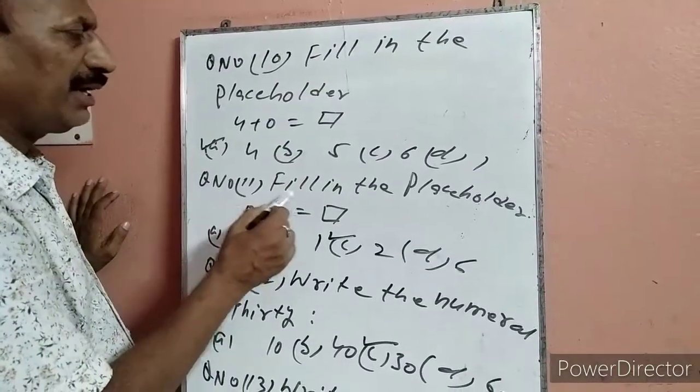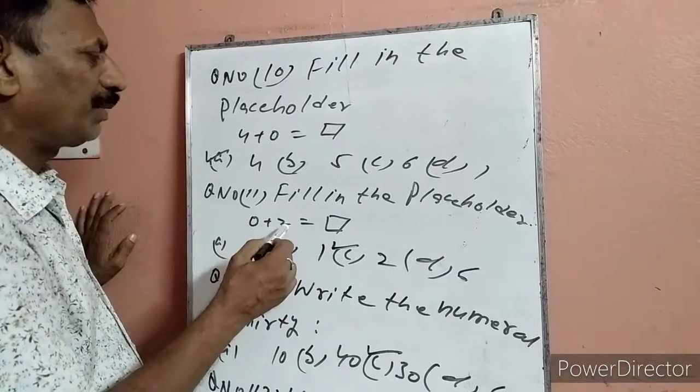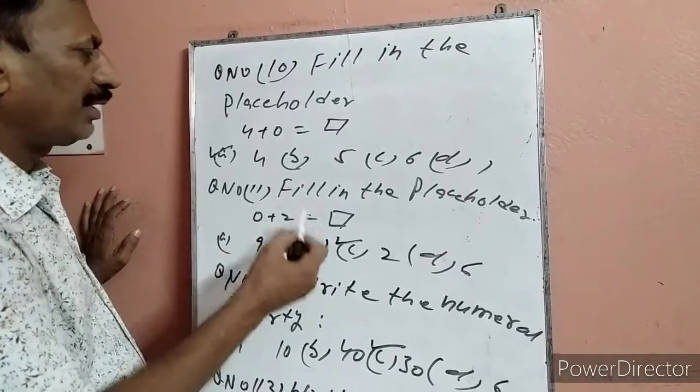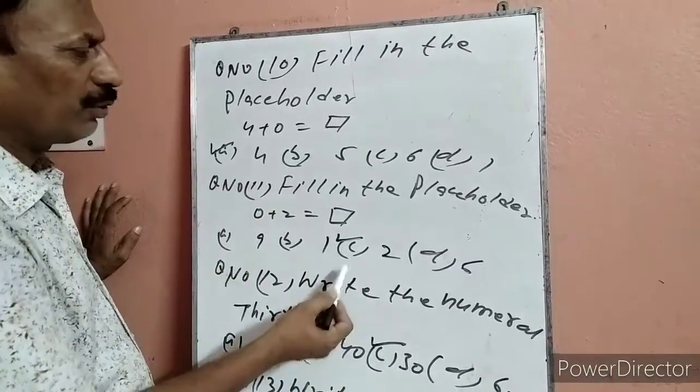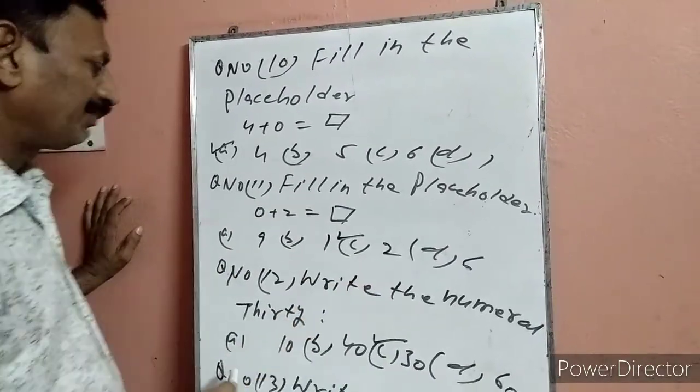Question 11: Fill in the blank — 0 plus 2 बराबर? Answer 2 ही होगा. 2 C पर है, C पर टिक लगा दिया.